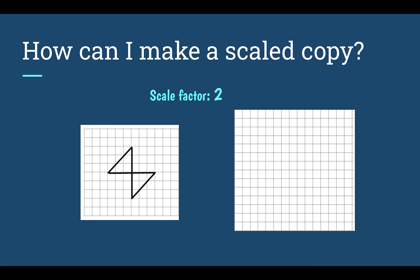If I want to make a scale copy with a scale factor of two, that means I am multiplying everything by two. I'm going to start here — I have the center of our original and I'm going to choose a spot on my graph paper for the center of my scale copy. In my original it is three spaces up, so I drew the same as the original three up, but I need to make it with a scale factor of two, so I'm going to multiply that by two and my scale copy will have a side of six going up.